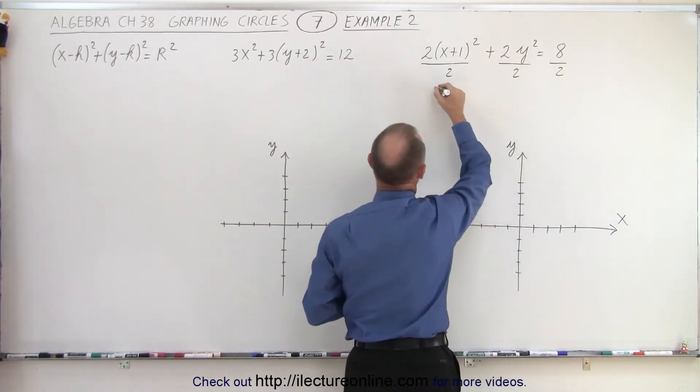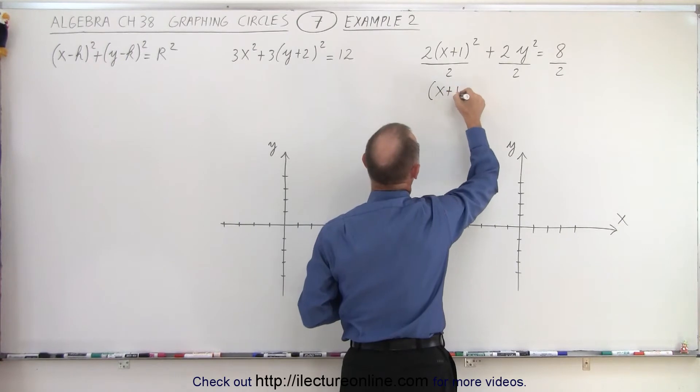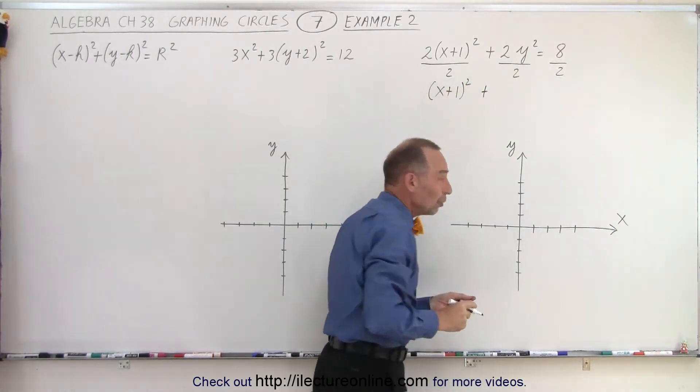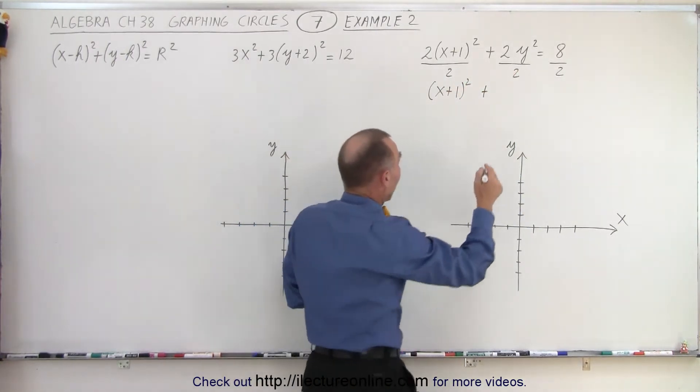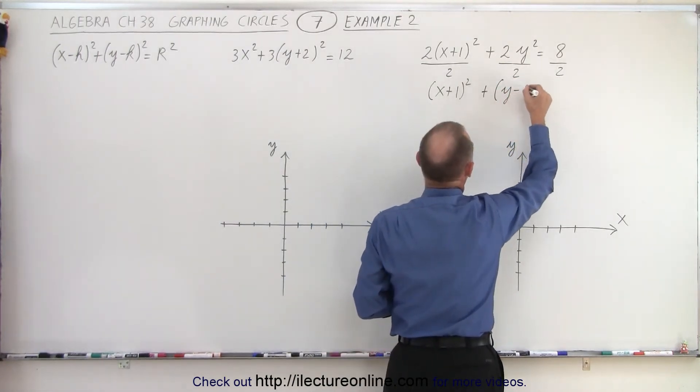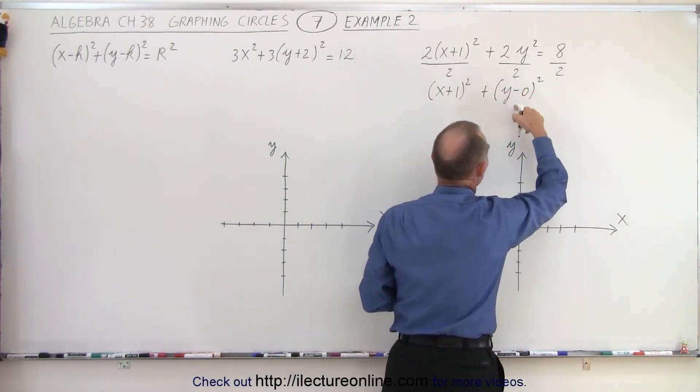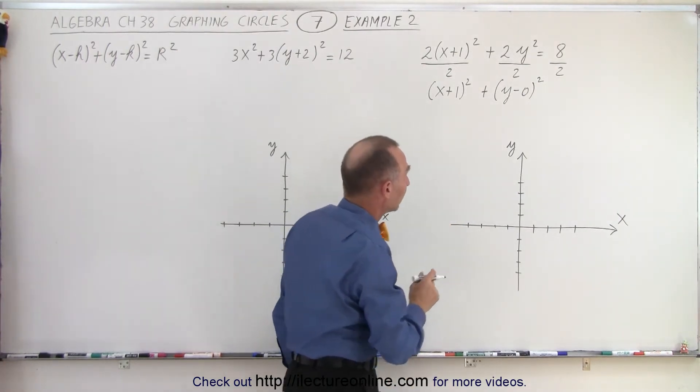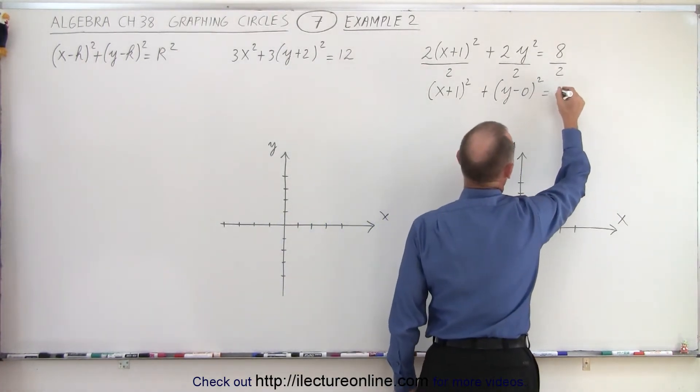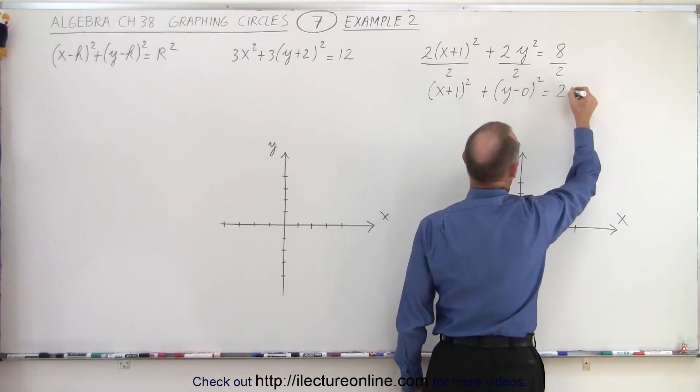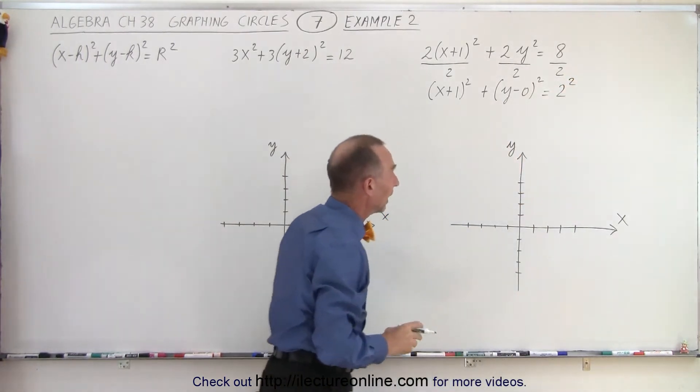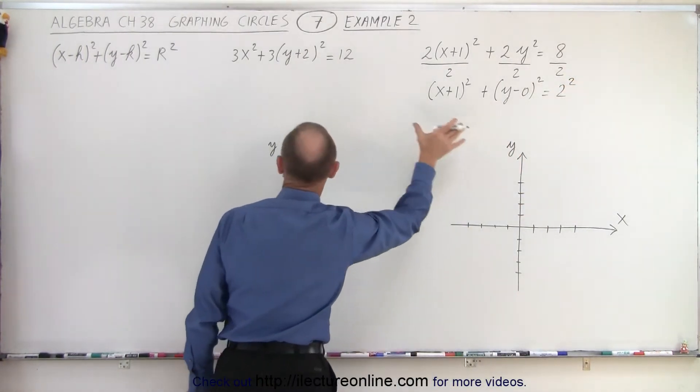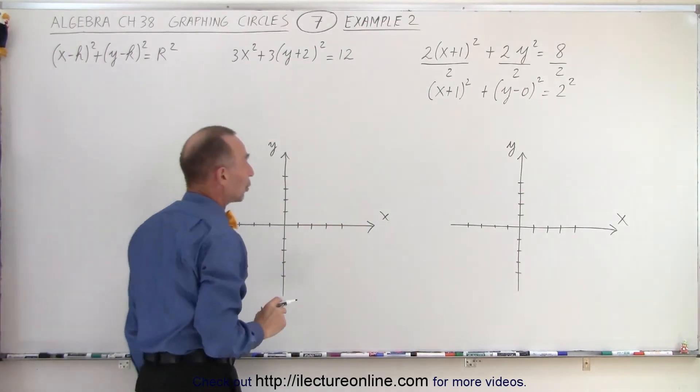Alright that means we now end up with (x+1)² plus, now even though it says y squared we could write it as (y-0)² if that helps you understand where to put that central location of the circle, the center of the circle. And then this is equal to 4. Now 4 can be written as 2². And now you can see that this is exactly like the general form of the equation.